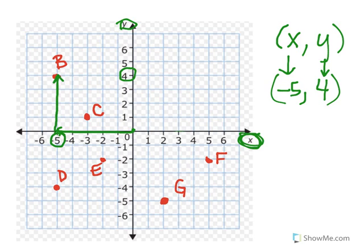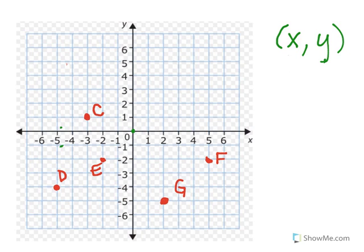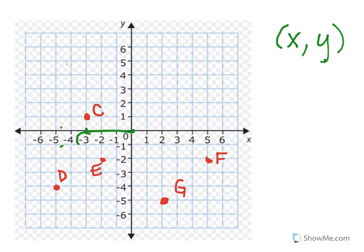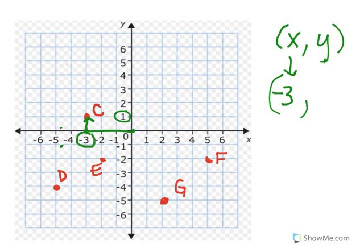Let's locate point C. Rules never, ever change. From my point of origin, I'm going to move negative one, two, three — that's negative three for my x-axis, because I moved to the left of the number line. Remember, any number to the left of zero is a negative. And I went up — I moved up one, so my y-axis is a positive one.